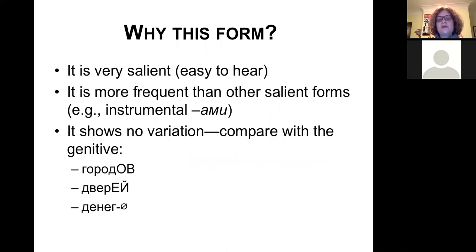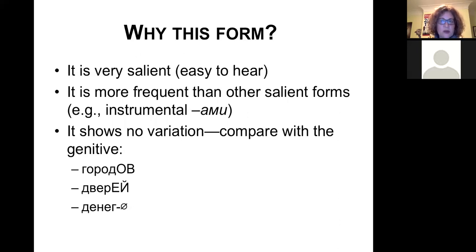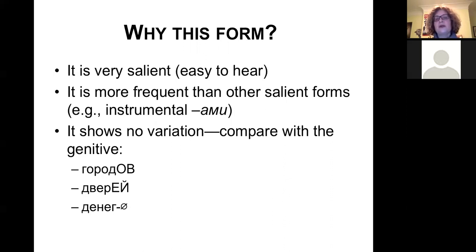We also find this -ах form in Russian dialects among speakers who have never had any exposure to anything but Russian, and in the language of monolingual children learning Russian — people with no exposure to another language. There is something about this special form that makes it extremely strong and desirable for speakers dealing with Russian prepositions. First, it's very salient and easy to hear. Second, heritage speakers hear it a lot in their input. And third, it doesn't show any variation compared to Russian genitive forms where we have three different endings. So -ах takes over and essentially becomes the general prepositional case that heritage speakers use.